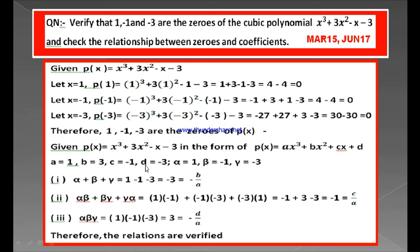Now let us verify the first relation: the sum of all the zeros, alpha plus beta plus gamma. Alpha is 1, beta is minus 1, and gamma is minus 3. Plus 1 and minus 1 cancel, leaving minus 3. This minus 3 is nothing but minus b by a: minus 3 by 1 is minus 3. Therefore the sum of the three zeros equals minus b by a. This is the first relation.